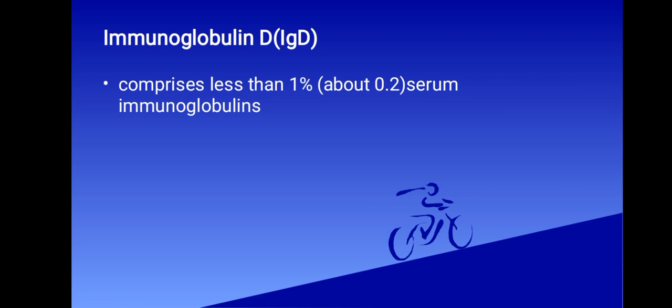Now we're going to look at immunoglobulin D, which comprises less than one percent — about 0.2% — of serum immunoglobulins. The precise function of immunoglobulin D still remains unclear, but IgD is present on the surface of B lymphocytes along with immunoglobulin M. Immunoglobulin D and immunoglobulin M serve as recognition receptors for antigens, and IgD may also play a role in antigen-triggered lymphocyte differentiation.